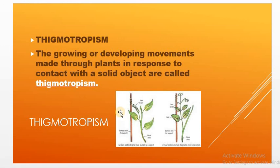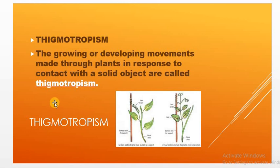A quick recap of today's lesson: I explained the different plant hormones or phytohormones — auxins, cytokinins, gibberellins, abscisic acid, and ethylene — which are responsible for the growth and development of plant parts. I also explained the specific movements of plant parts in response to stimuli, called tropism or tropic movement. The different tropic movements are phototropism, hydrotropism, geotropism, thigmotropism, and chemotropism. Have a nice day ahead.